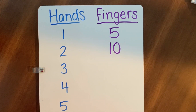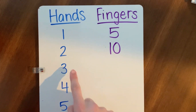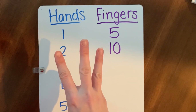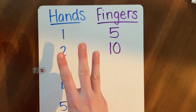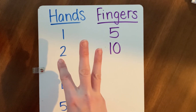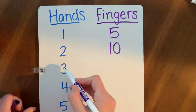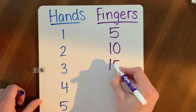We talked about how instead of drawing hands or counting fingers, there's a faster way to figure out how many fingers go with how many hands. So let's try that strategy for three hands. Something we can do is skip count by five. If I have three hands, I'm going to skip count by five three times. Five, 10, 15. If I have three hands, there are 15 fingers.